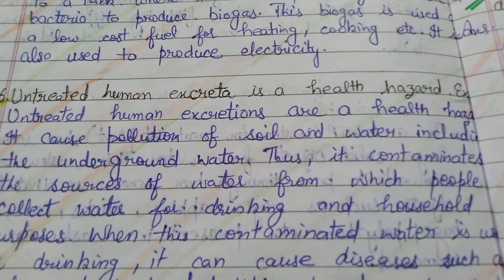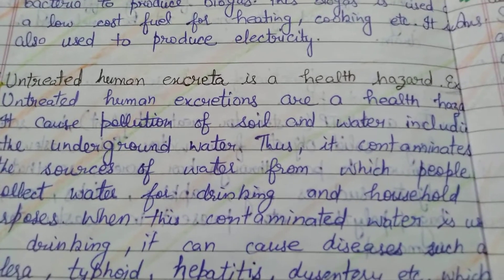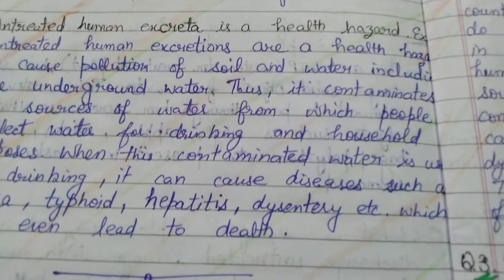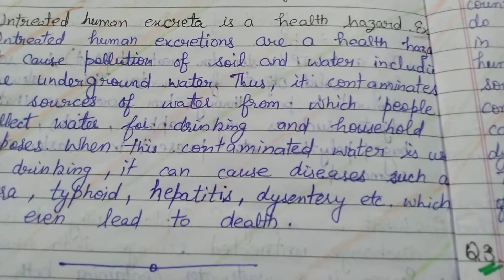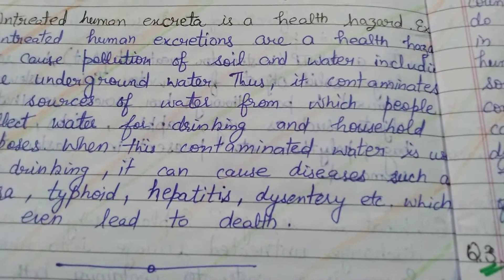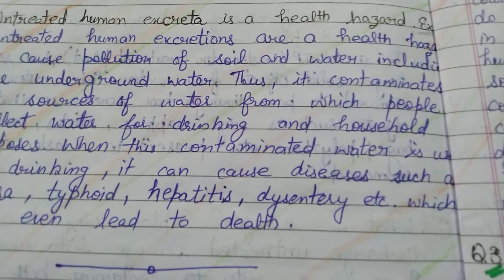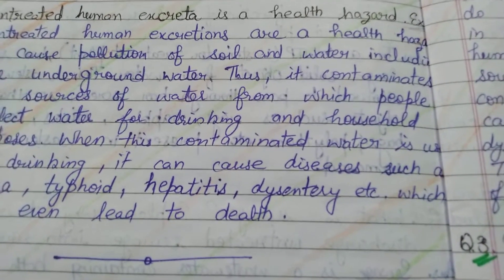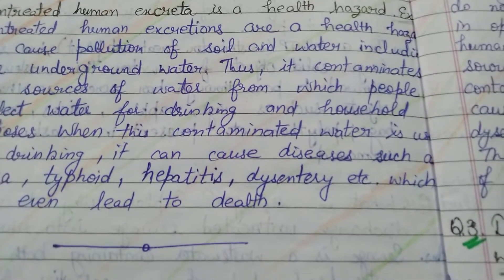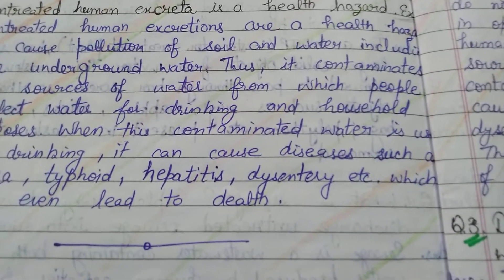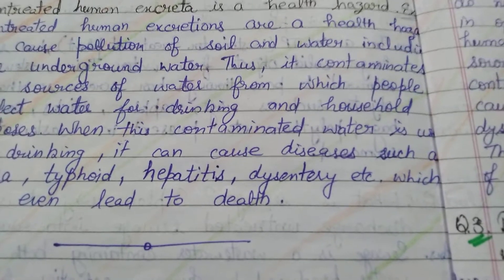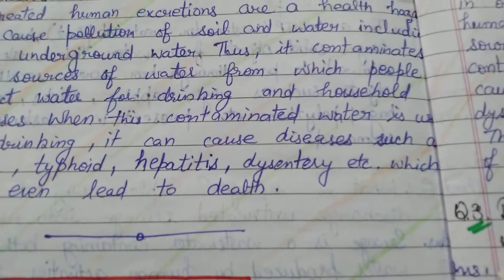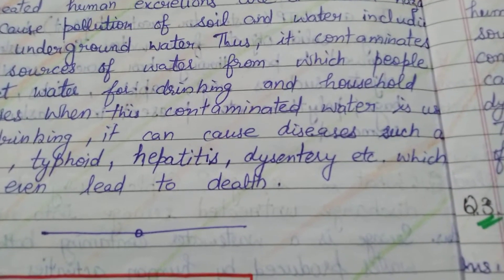What happens if human excreta is left untreated? Untreated human waste should not be discarded into soil layers or rivers without treatment. Otherwise it mixes with the water and can cause waterborne diseases like cholera, typhoid, and hepatitis.